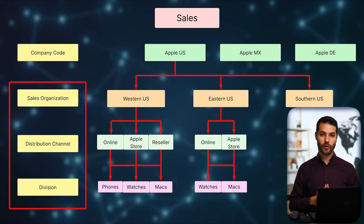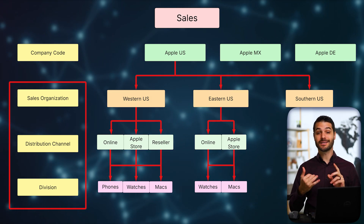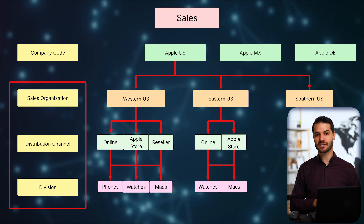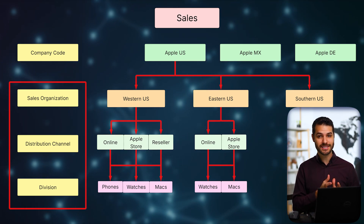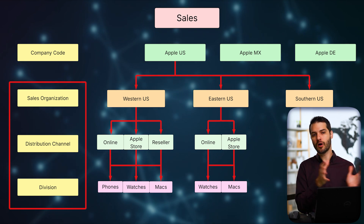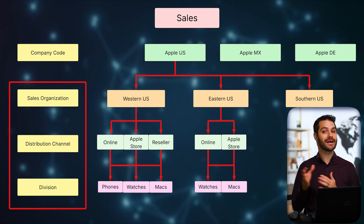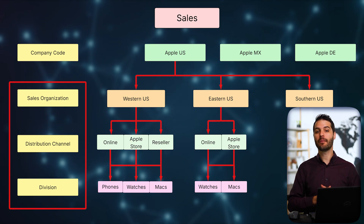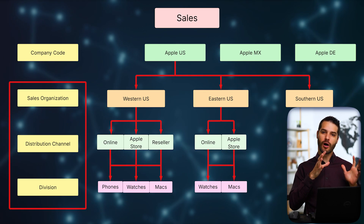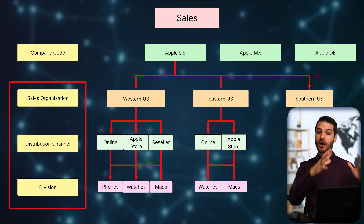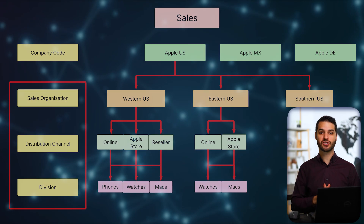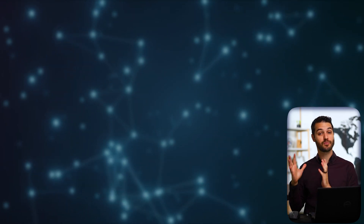There are other elements like sales groups and sales offices, but we won't cover those here. The last sales-related thing to mention is shipping points — because the S4 HANA module is called Sales and Distribution, and the distribution element happens through shipping points. However, shipping points aren't contained within the sales structure; they're part of what we're going to next: purchasing.